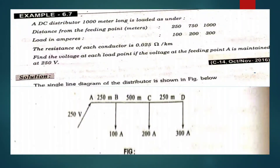Good morning students. In this class, I am going to be discussing about the problems on DC distribution. The first problem is: a distributor 1000 meters long is loaded as under — distance from the feeding point in meters.